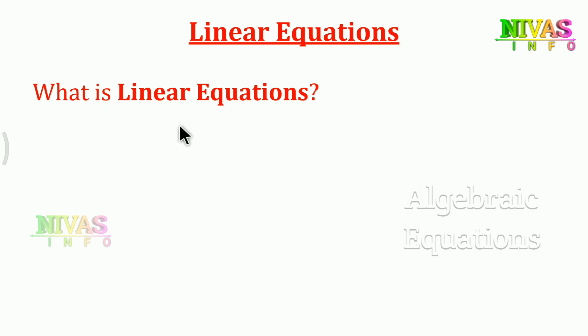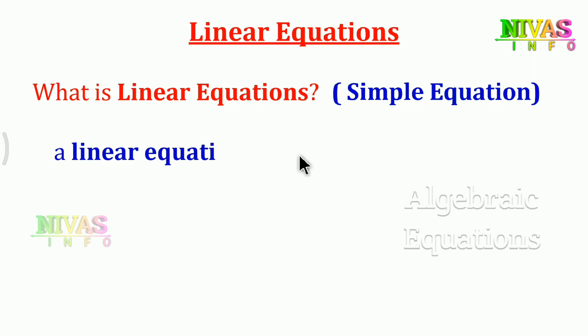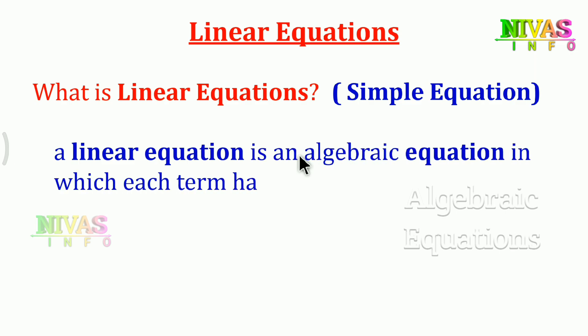A linear equation is a simple equation. There are many types of equations. The first and simplest is the linear equation. I will explain its definition. A linear equation is an algebraic equation in which each term has an exponent of 1.